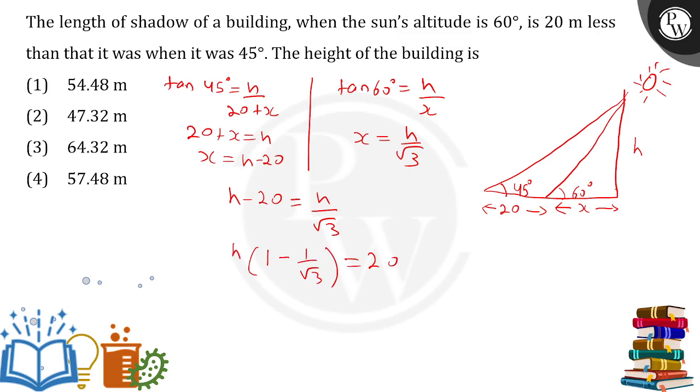So when you solve this root 3 minus 1 upon root 3, this whole multiplied by h equals 20. From here you can calculate the value of h, which will be simply 20 into root 3 upon root 3 minus 1.